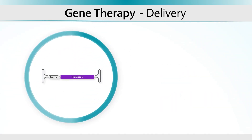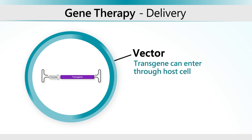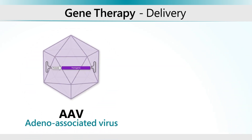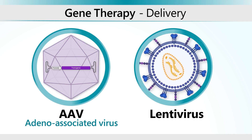Gene therapy can be delivered using bacterial and viral vectors, which enable foreign DNA, like the functional transgene, entry into the host cell. Adeno-associated virus, AAV, and lentivirus have been used as an effective delivery system for transporting therapeutic genetic material into living tissue. These viruses are transformed into gene therapy vectors through the addition of new DNA and removal of most of their viral components.